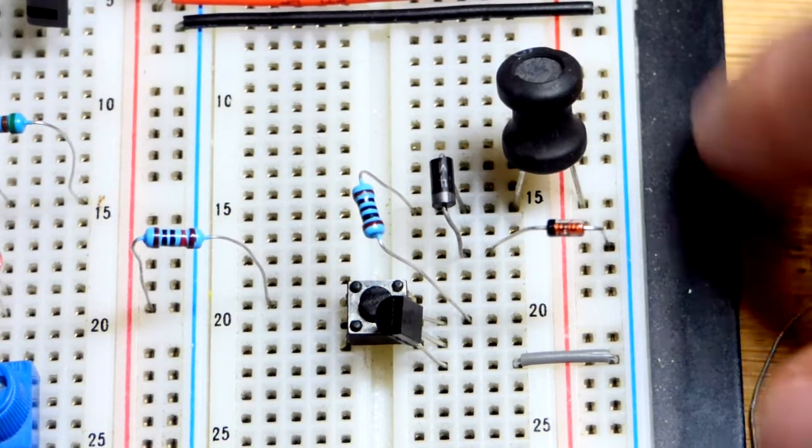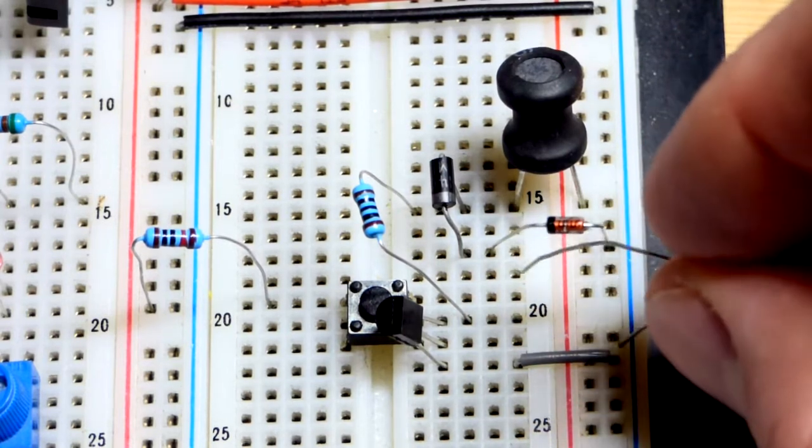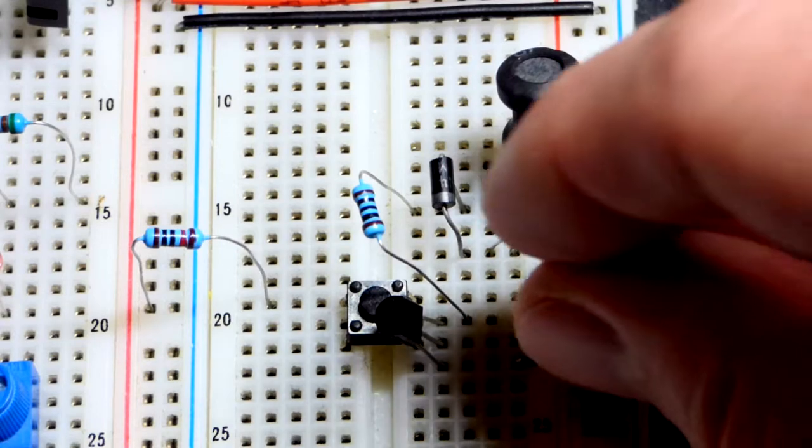And then we'll have the zener down there, cathode 5.6 volt zener diode, cathode there and anode to the negative side of the supply. And that's going to actually conduct at a slightly lower voltage as bursts of current go down.